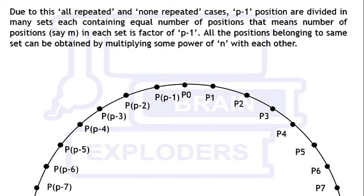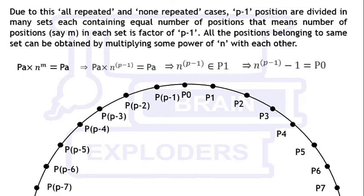All the positions belonging to the same set can be obtained by multiplying some power of n with each other. If the number of elements in each set are m, it means we will reach the initial position in m steps. From this we can conclude that PA times n^m equals PA again, where PA is any position.